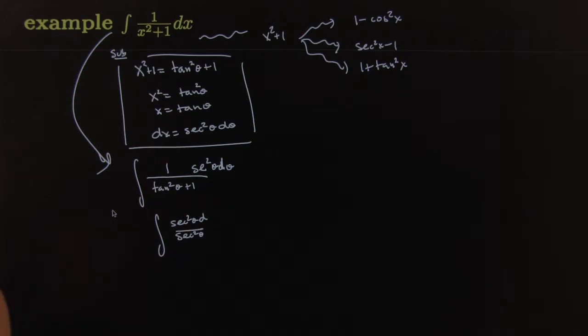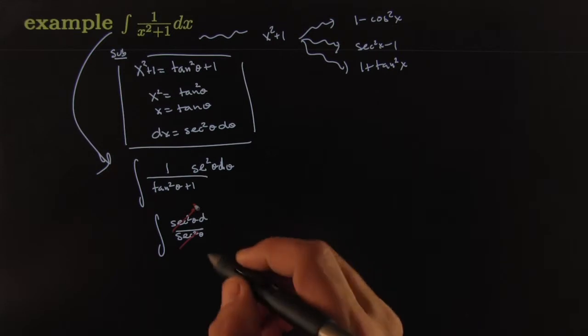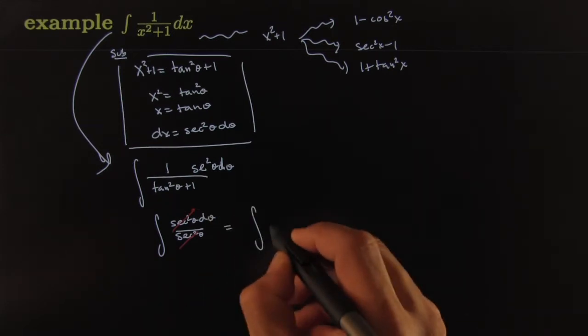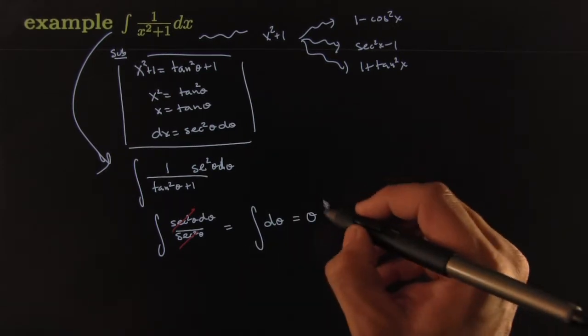The secant squared cancels that one, and you're left with just integral of d theta, which of course is just theta. And then you're done integrating.